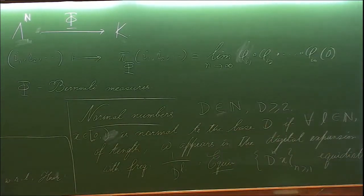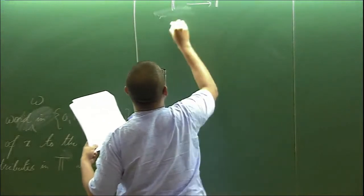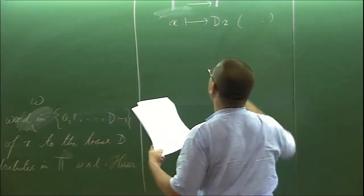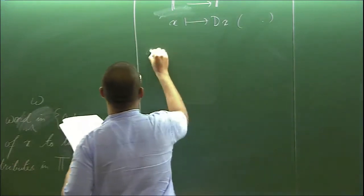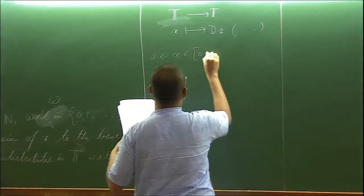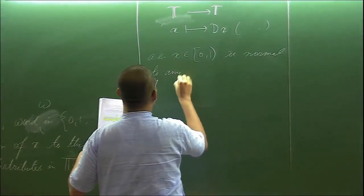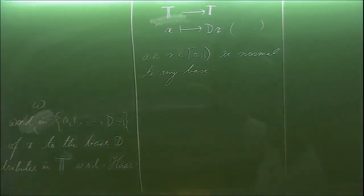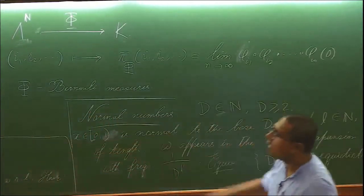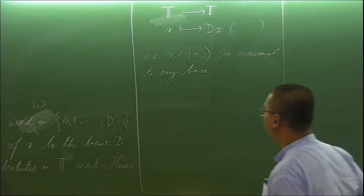From the ergodicity of this map x to dx modulo 1 from torus to torus, so since this map is ergodic, as a consequence of this ergodicity follows that almost every x is normal to any base. Therefore, it is now legitimate to focus our attention on the self-similar subsets of the real line and ask questions about the size of the set of numbers which are normal to a given base or any base.